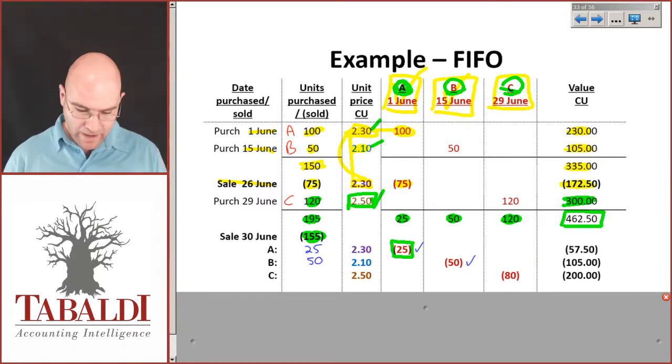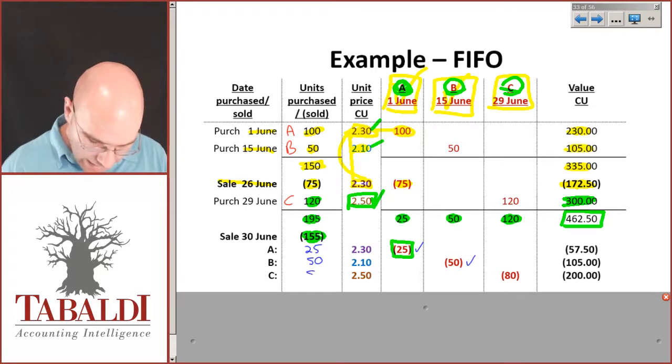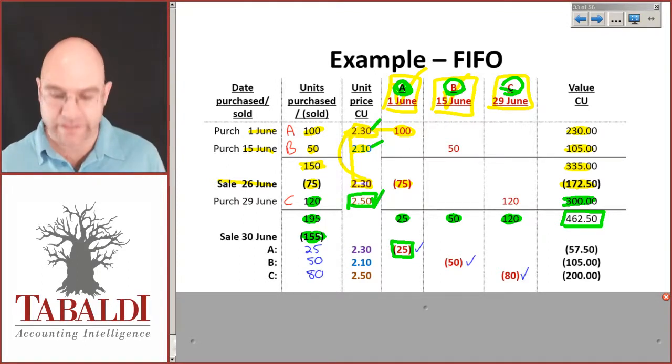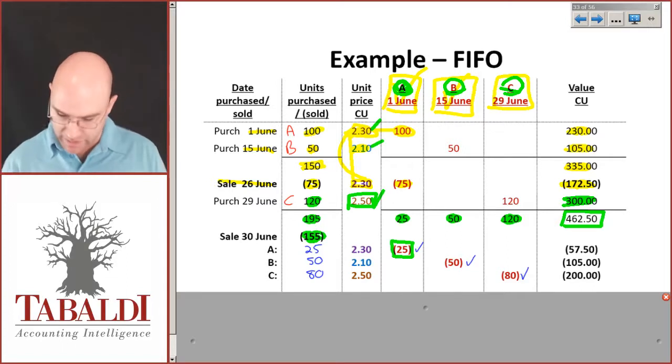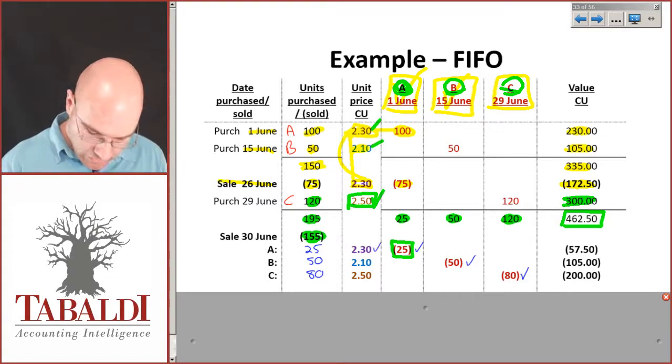And 155 minus 25 minus 50 leaves me with 80 items that will come out of stockpile C, being the purchases on the 29th of June.